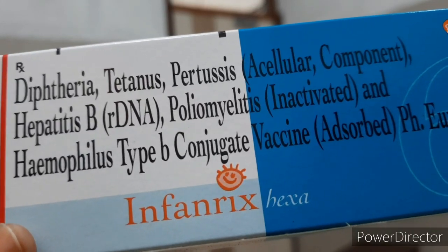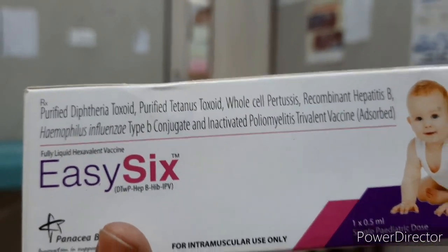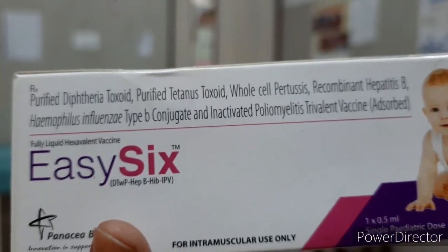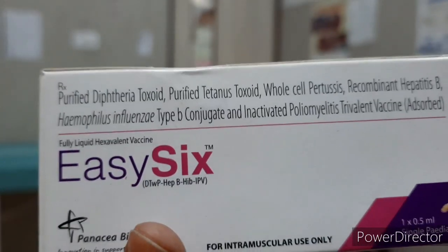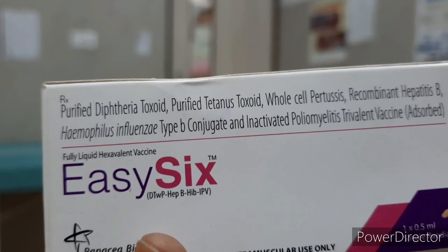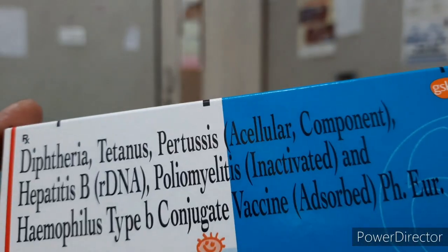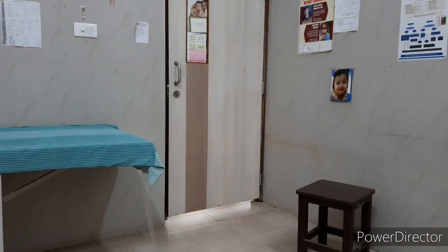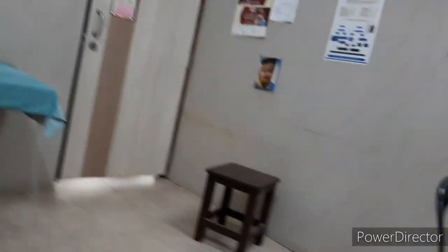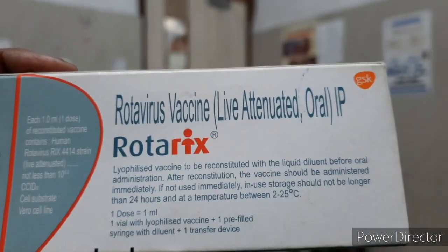IPV is given 0.5 ml intramuscular into the anterolateral thigh. There is another vaccine, EC6 — the difference between EC6 and the others is that EC6 uses whole cell pertussis, whereas the previously shown vaccines use acellular pertussis. You can see the pertussis component here is acellular.